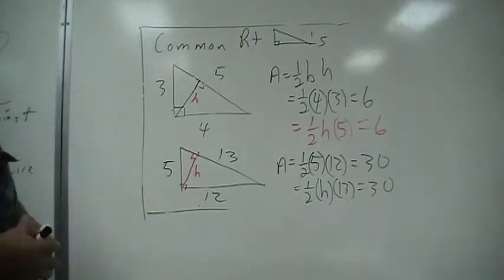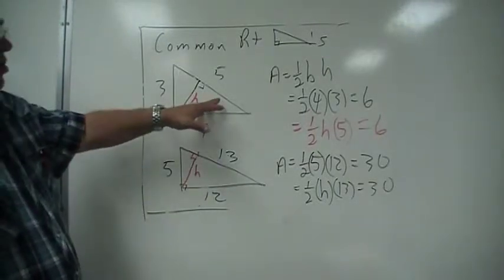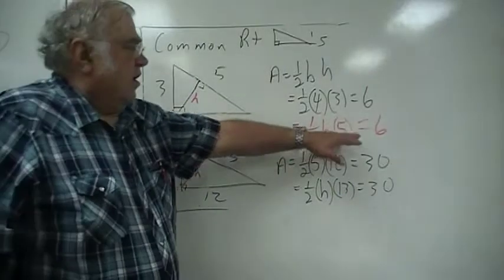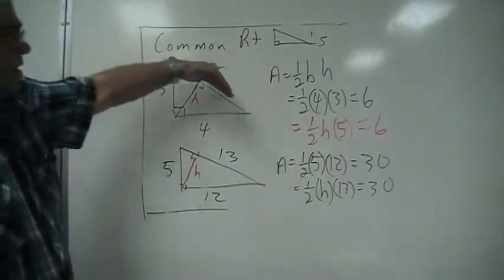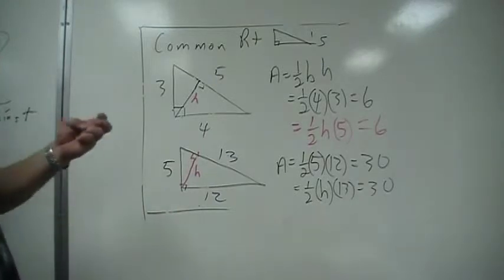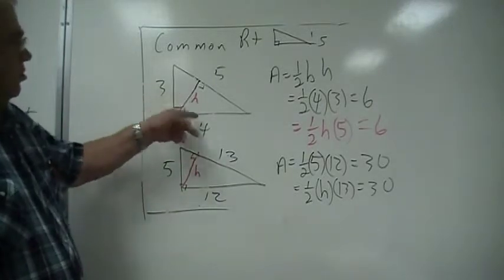But in any case, so to find this H here, 1/2 H times 5, this is the base and this is the height. Every triangle has three altitudes, this one, these two, and this one.